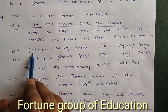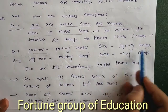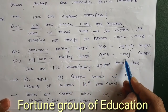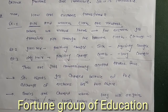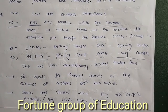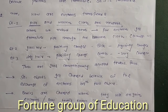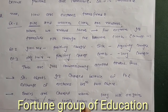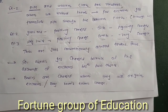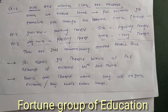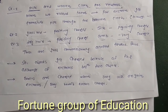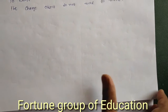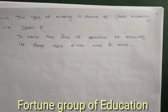Example two: a glass rod rubbed with silk — the glass rod becomes positively charged and the silk becomes negatively charged. Another example: dry hair and a comb — the dry hair becomes positively charged and the comb becomes negatively charged. These are conventionally accepted facts. Objects get charged because of the exchange of electrons between two bodies. Bodies are charged when they lose or gain electrons.